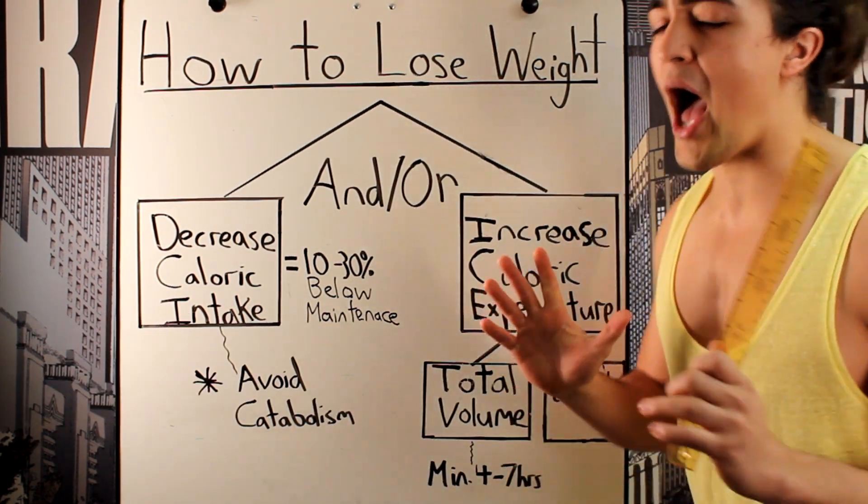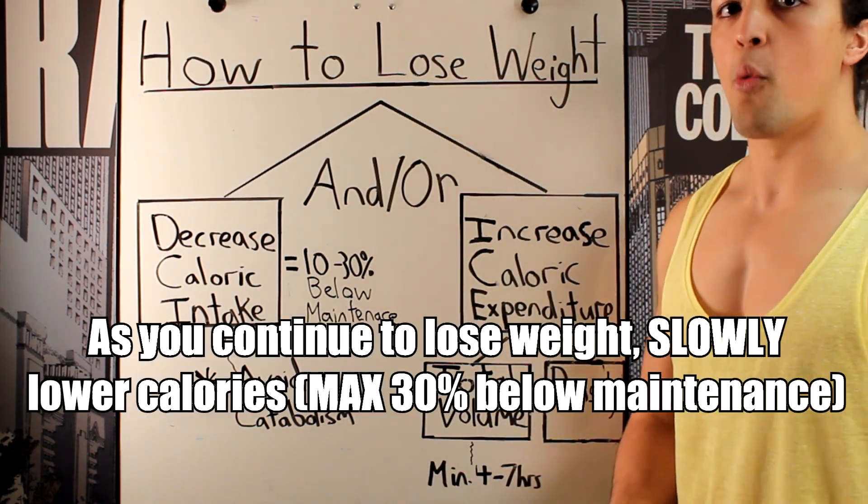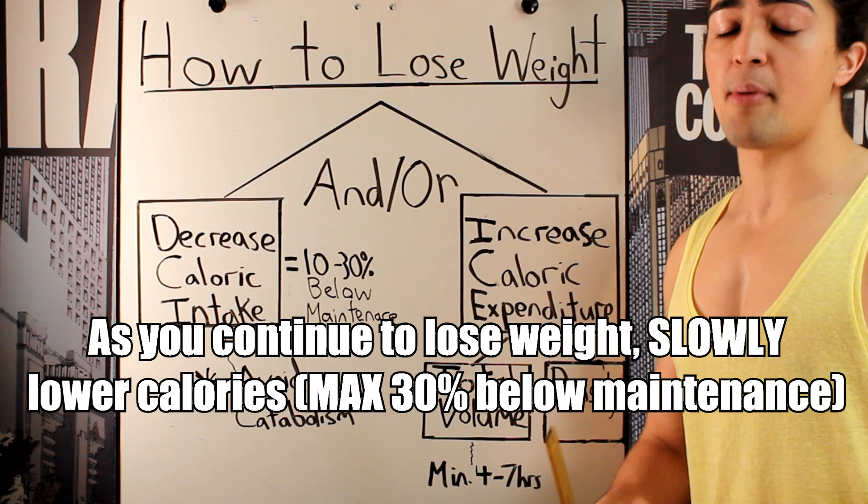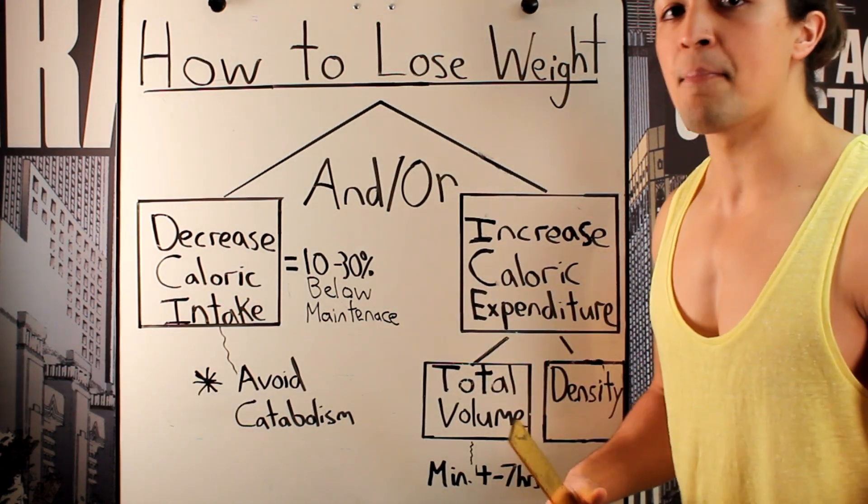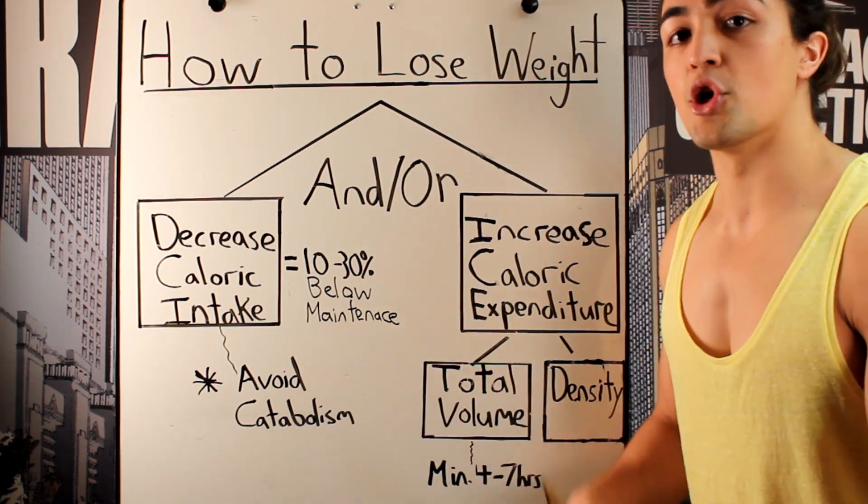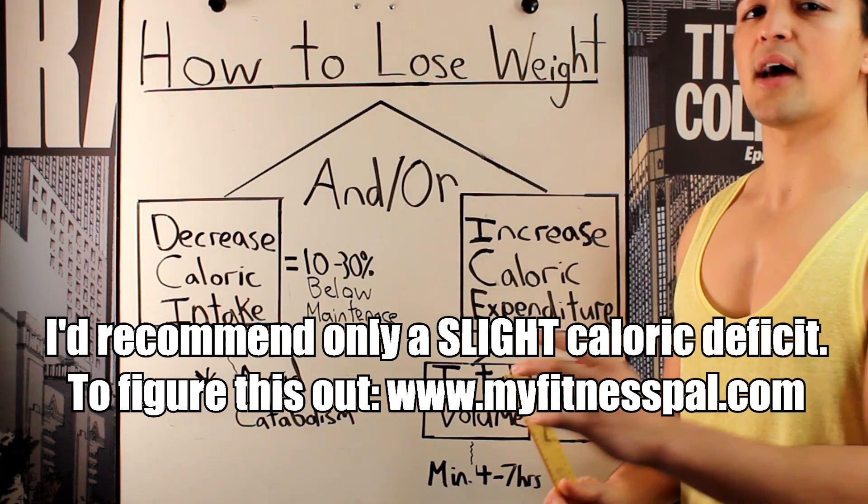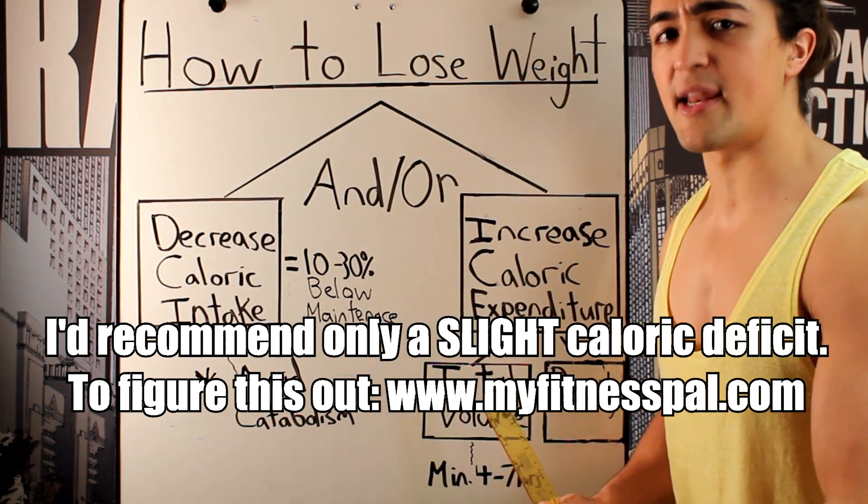The one thing you have to be absolutely careful of is avoiding entering catabolism, where you eat too few calories so your body goes into starvation mode. Instead of just breaking down fat, you can also break down your muscle. This is when in a fat loss phase, you lose your muscle. It's a smart idea to initially be below maintenance, but it's not necessary to continuously be dipping down your calories.